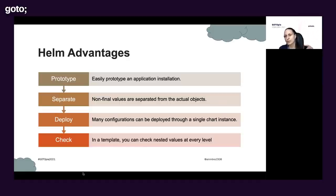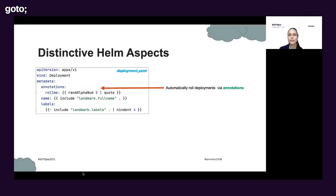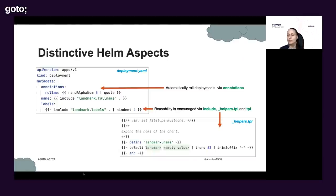Helm gives us a little bit more than just templating. It gives us some very cool aspects in terms of automatically rolling deployments via annotations. The annotation is going to trigger the automatic deployment. There's also the checksum annotation, which can check if something has changed in regards to your secret or config map. If you work with plain Kubernetes objects, you know that if you change the contents of a secret, your deployment is not going to automatically get triggered — it expects some instruction from you to take action. With the checksum annotation, this is handled automatically.